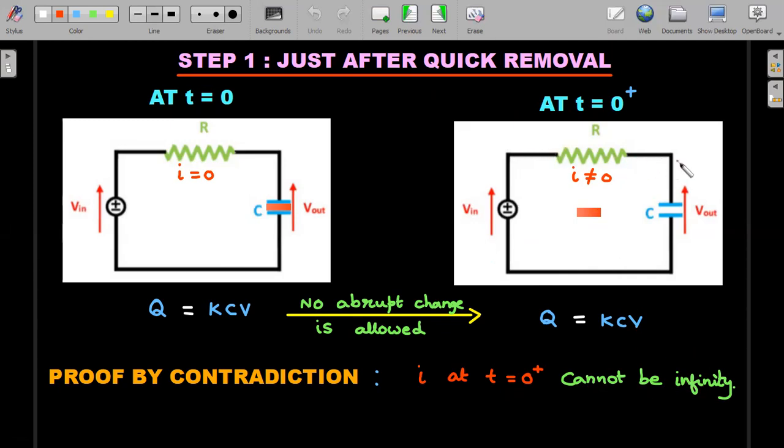Current cannot have infinite value in this situation. The reason: if current were to be infinity, then the potential drop across this should be provided as infinity. Remember Ohm's law, I into R, which cannot be provided by a finite emf. Since the current cannot be infinity, the charge has to remain the same. That's step one, where we realized that after removal the charge stays as KCV for that short duration.